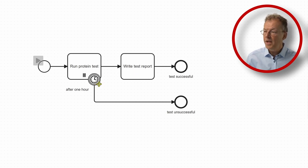Here we have an interrupting boundary timer event. After one hour, this will cancel the run protein test task. Any remaining instances will not be executed, and we will also not execute write test report in that case because we will finish with test unsuccessful.